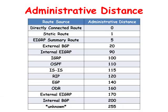Cisco routers use a value called Administrative Distance to select the best path when they learn of two or more routes to the same destination with the same prefix from different routing protocols. The administrative distance is a value between 0 and 255. The lower the administrative distance value, the higher the protocol's believability or trustworthiness.